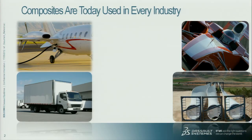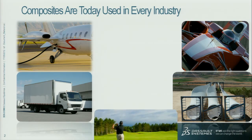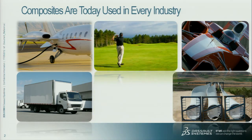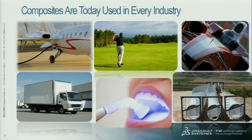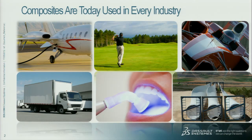Wind turbine blades and wind energy blades — we heard a lot about that yesterday in the general lecture, so composites are used extensively there. In the sports and golf industry, a lot of manufacturers like to use composites to try to get better performance, so bad golfers can feel a little bit better about themselves. And even the dental industry is now starting to use composites — not only for resins for fillings, but also for dental bridges.